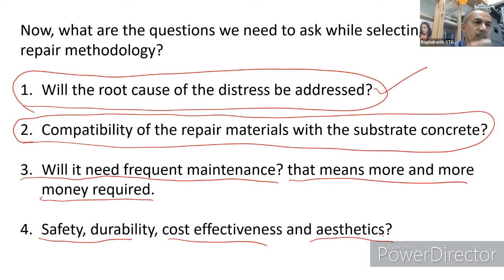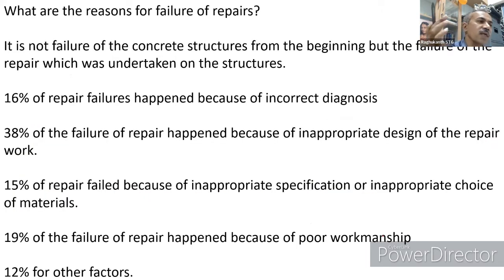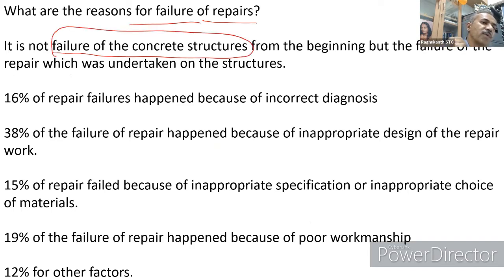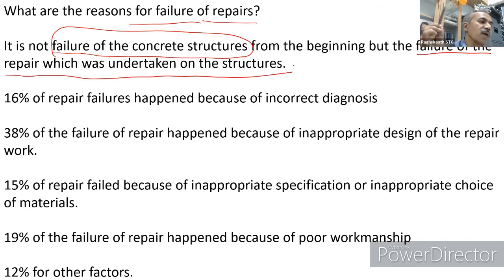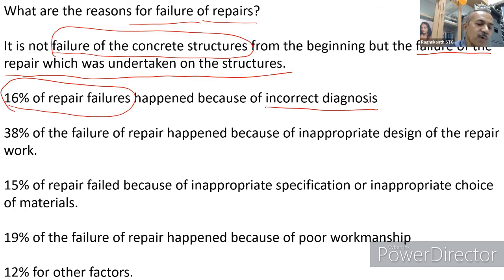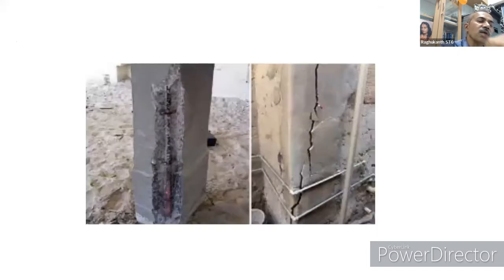In the construction industry, most repair failures occur not from the original structural failure but from the repair itself failing after it has been done. Statistics from the construction industry show that 60 percent of repair failures come from incorrect diagnosis. For example, when reinforcement is exposed in a column, people simply cover it without properly understanding the corrosion in the rod — the diagnosis is not done properly.